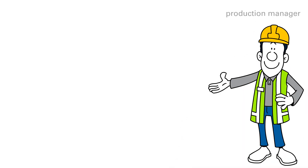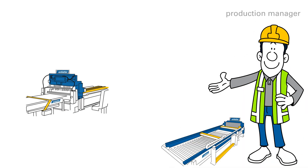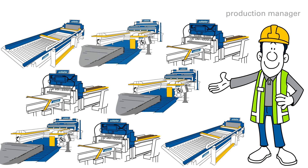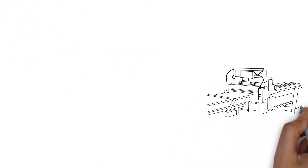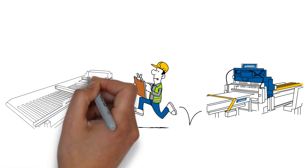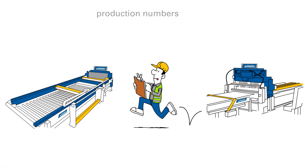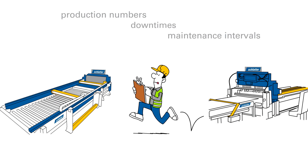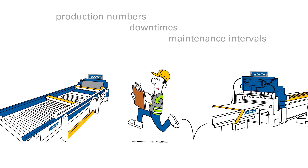This is Bob. He is a production manager and responsible for many mesh welding machines. In order for Bob to get a clear view of his production, he has to manually record data such as production numbers, downtimes and maintenance intervals on each Schlatter machine. It's a very time-consuming and stressful task.